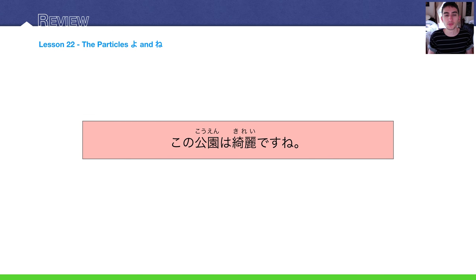Lesson 22 was all about the particles yo and ne. These are sentence final particles. Yo is used when the speaker thinks that the listener doesn't know the information that he or she is about to say.